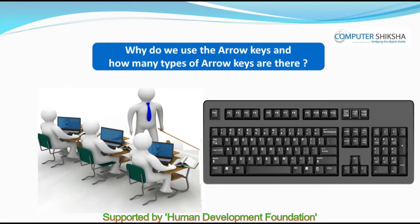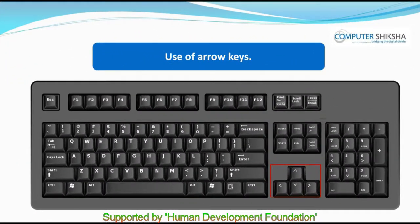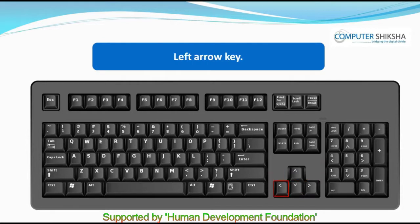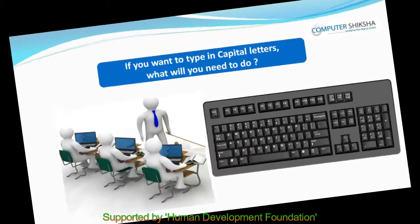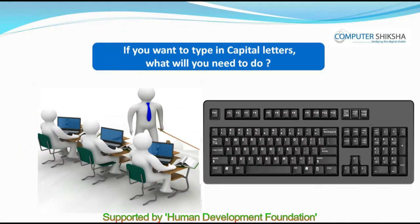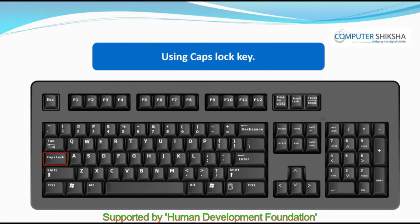Why do we use the arrow keys and how many types of arrow keys are there? We use the arrow keys to take our cursor from one line to another. There are four types of arrow keys: up, down, left, and right. If you want to type in capital letters, what will you need to do? To type in capital letters, we press the Caps Lock key once and then we will be able to type our text in capital letters. If we want to type once again in small letters, we press the Caps Lock key once again.